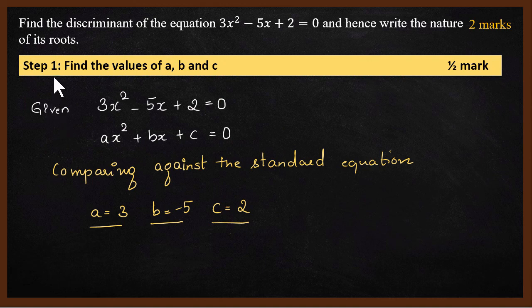The first step is to find the values of a, b, c. We have been given 3x² - 5x + 2 = 0. Let us compare that with ax² + bx + c = 0, the standard equation. We can say that a = 3, b = -5, and c = 2. If you write the abc values, you get half a mark.